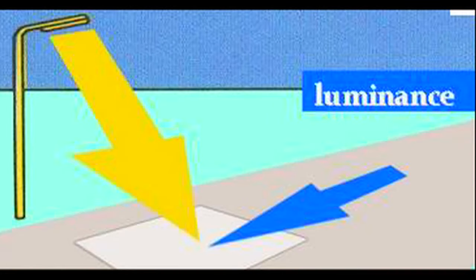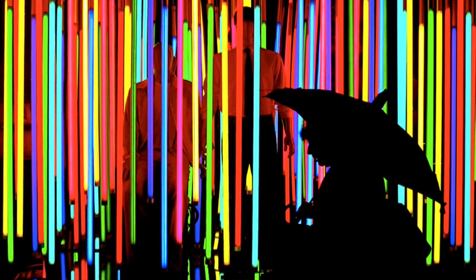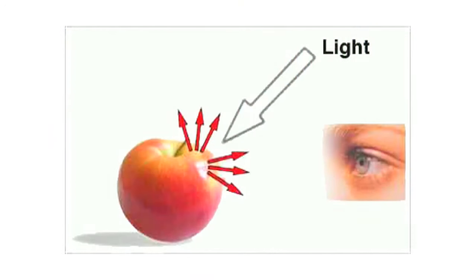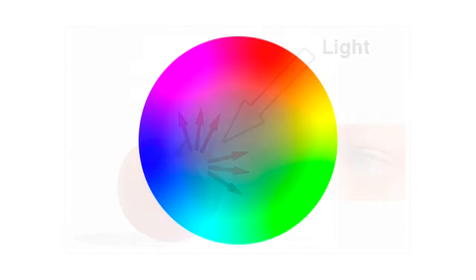Luminance depends on the amount of incident light on the object. Colour is defined by which wavelengths of light from an incident light source are reflected back to an observer's eye. These wavelengths describe the hue or the shade of an object.